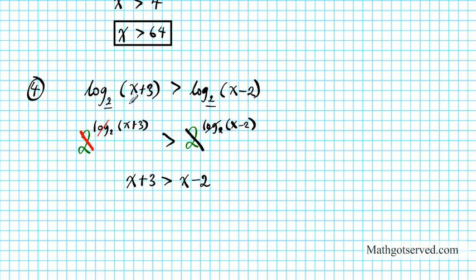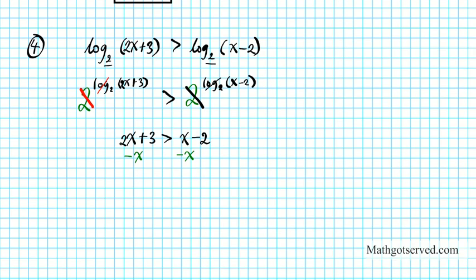Actually there is a 2 coefficient here — it's 2x plus 3 on the left. So to finish this off we subtract x from both sides. We'll have x plus 3 is greater than negative 2. Then we subtract 3 from both sides. And then we have x is greater than negative 5.